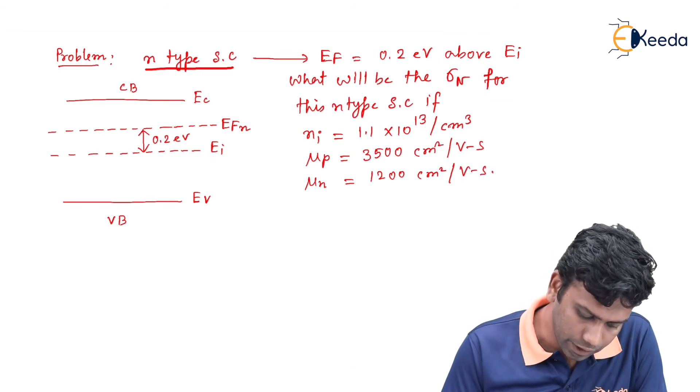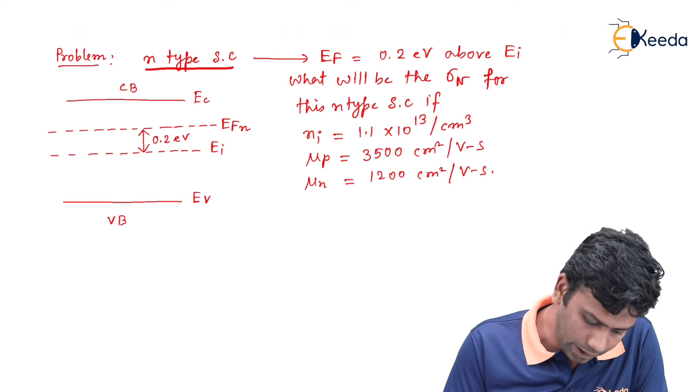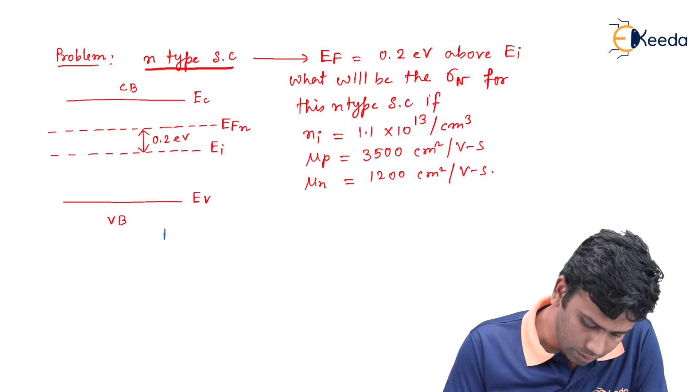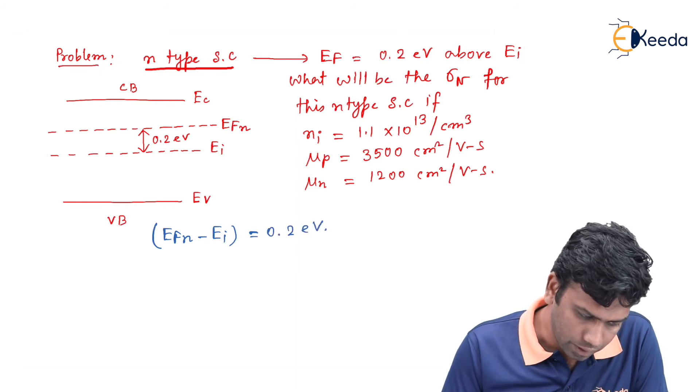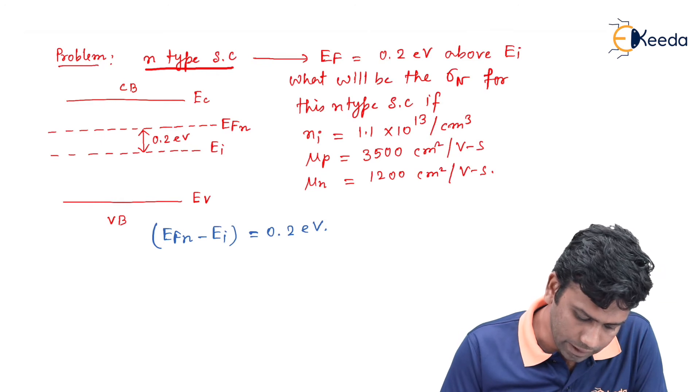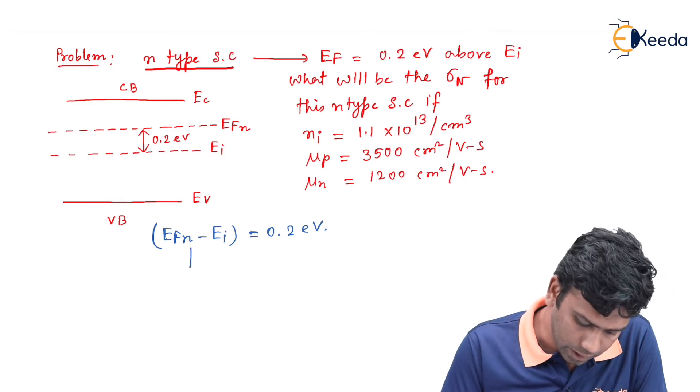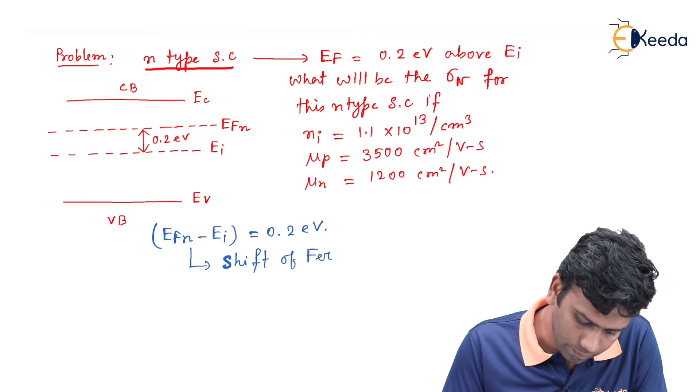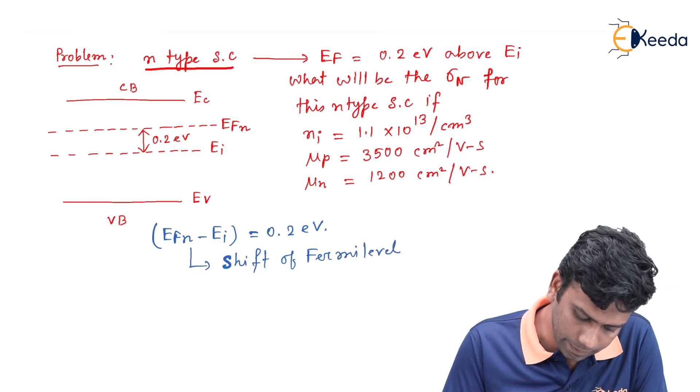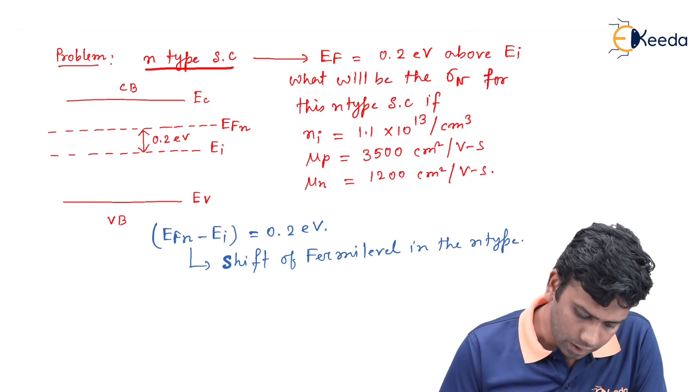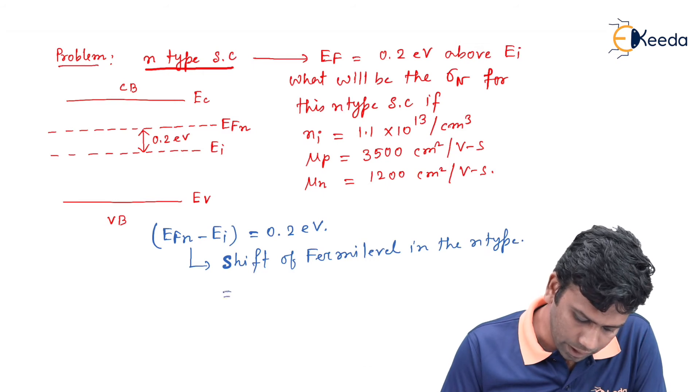We know from this problem that EF minus EI is given by 0.2 electron volt. This EFn minus EI is nothing but the shift of the Fermi level in the n-type. We can say that this shift we know will be kT ln Nd by Ni.